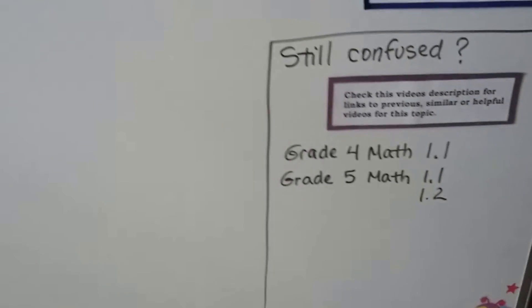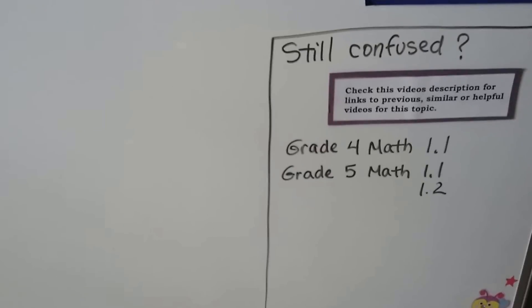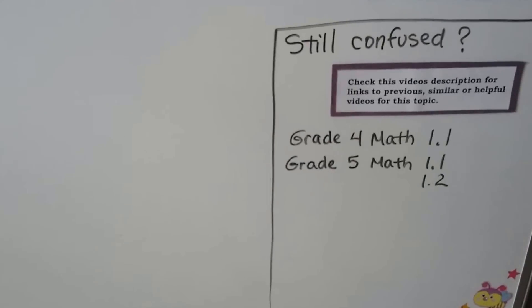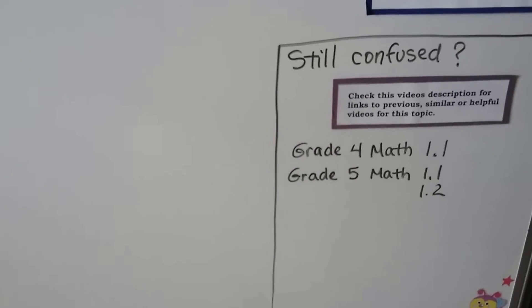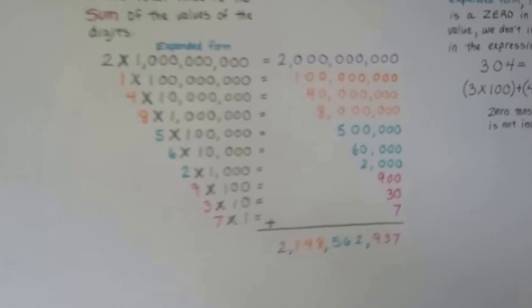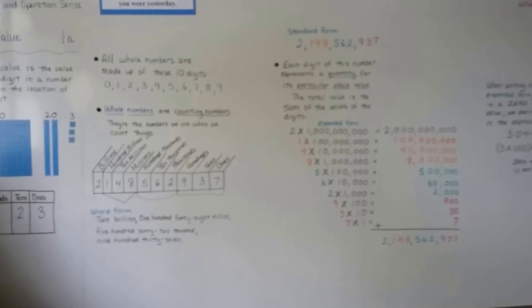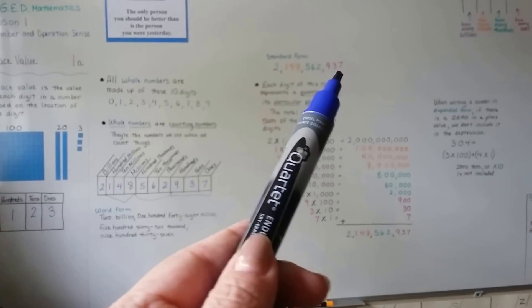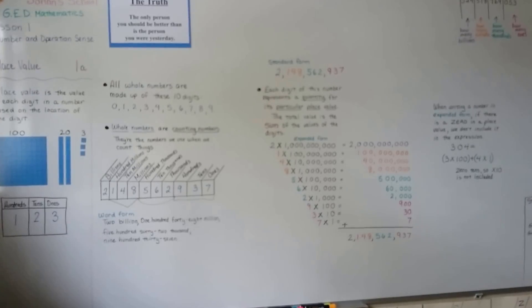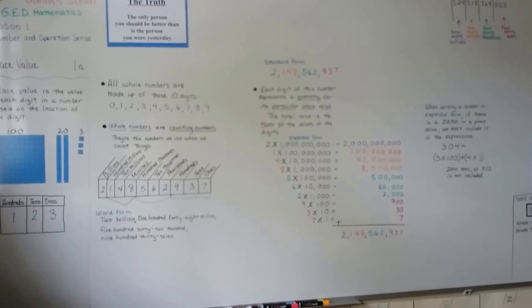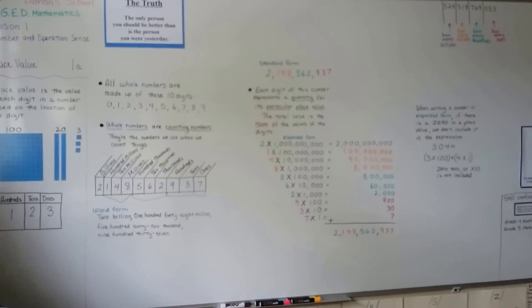I'm going to do this for all these GED math lessons — there will be links in the video's description to other videos I've made previously that you can watch for extra help. We're going to continue on to 1B, where we'll talk about what each of the sections between the commas are called and writing numbers in word form. I hope you're having a great day and I hope I'll see you there. Bye.